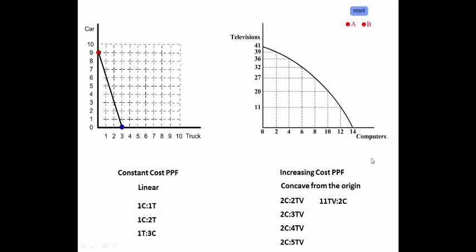Going the other way, watch what happens. To produce 11 televisions, you have to give up 2 computers. To produce just 9 televisions, it's going to cost you 2 computers — so your costs are climbing. To produce an additional 7 televisions, you have to give up 2 computers. And to produce an additional 5 televisions, you have to give up 2 computers. So either way — whether you're increasing computer production or increasing television production — it's going to cost you more. This is the difference between a constant cost and an increasing cost production possibilities frontier.